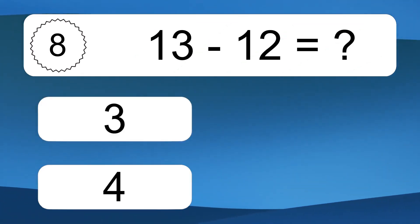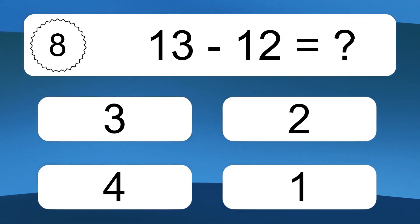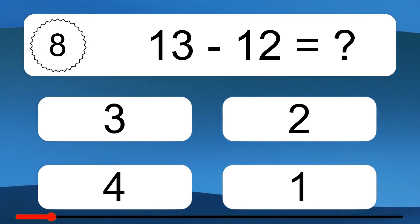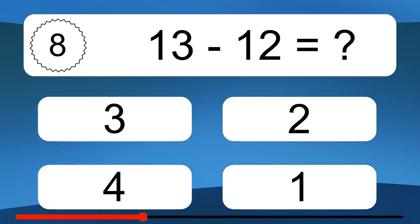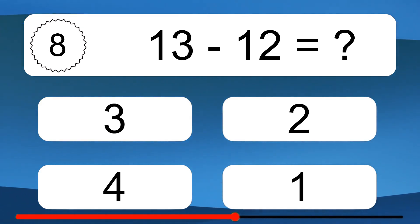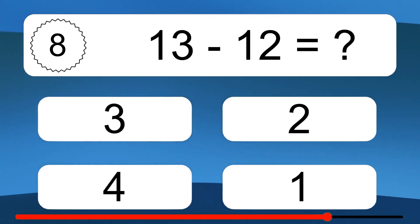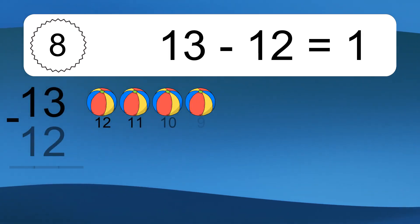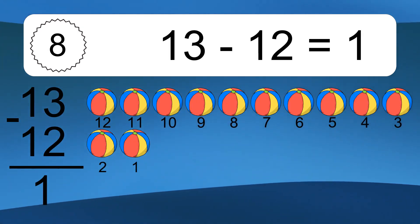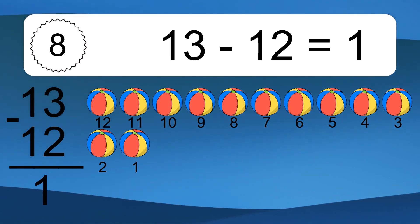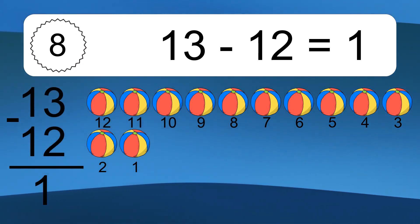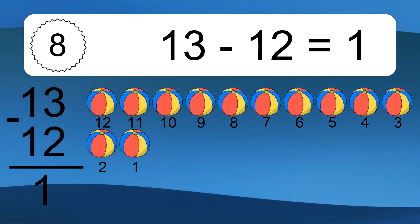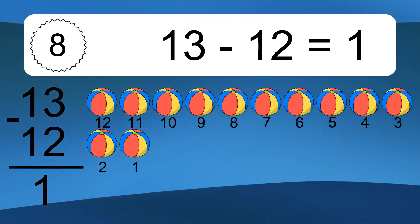13 minus 12 equals what? 13 minus 12 equals 1. Let's count it. 12, 11, 10, 9, 8, 7, 6, 5, 4, 3, 2, 1.